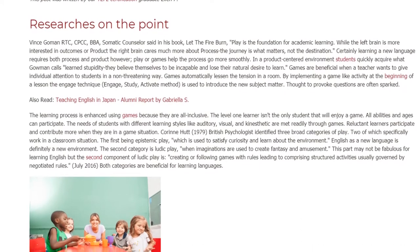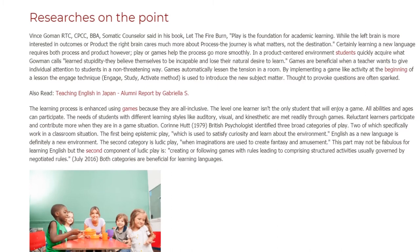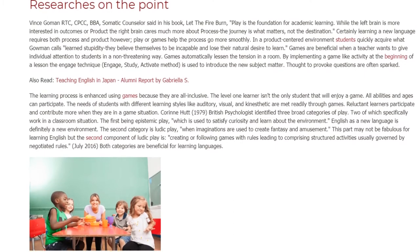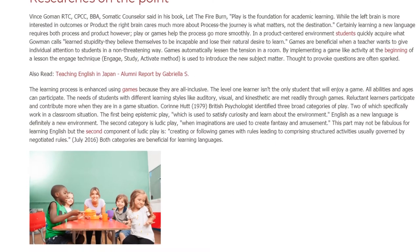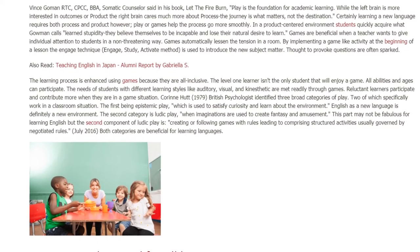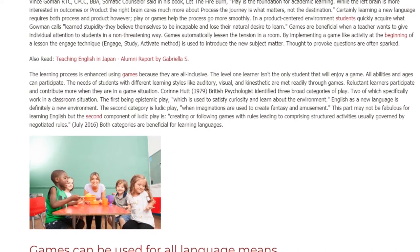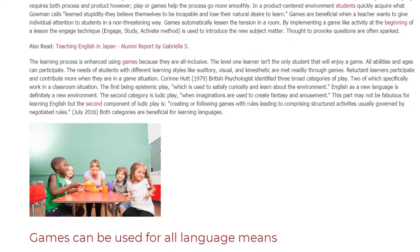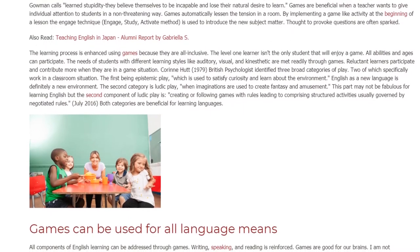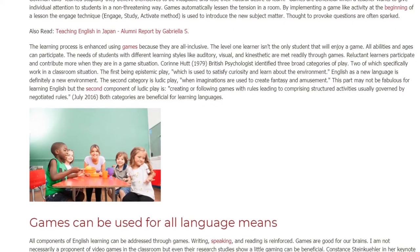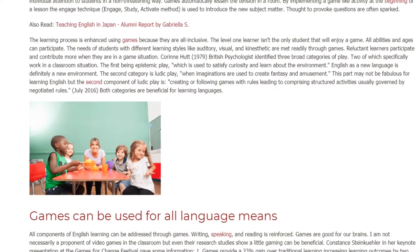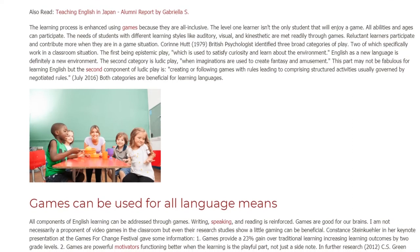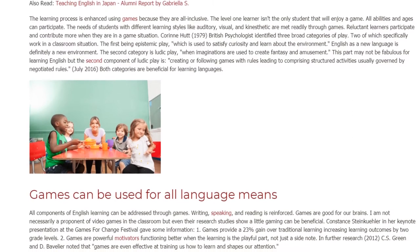Reluctant learners participate and contribute more when they are in a game situation. Corinne Hutt, 1979, a British psychologist, identified three broad categories of play, two of which specifically work in a classroom situation. The first is epistemic play, which is used to satisfy curiosity and learn about the environment — English as a new language is definitely a new environment. The second category is ludic play, when imaginations are used to create fantasy and amusement. The second component of ludic play involves creating or following games with rules, leading to structured activities usually governed by negotiated rules.